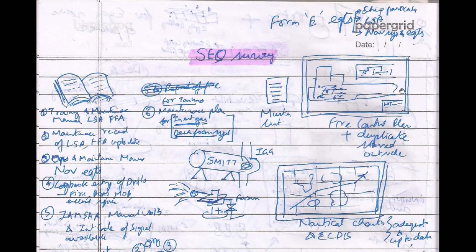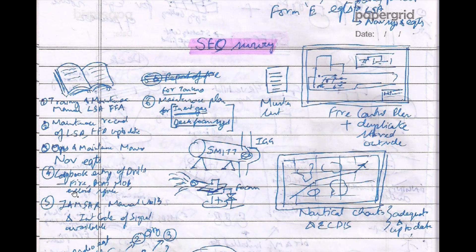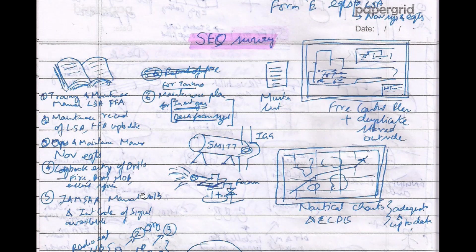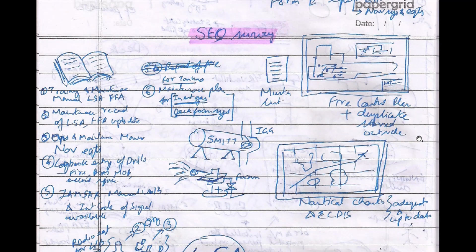If the surveyor asks how you would prepare for the SEQ survey, start with the general points, then move on to documentation. There is a checklist of six key points to remember: training and maintenance manual for LSA and FFA, maintenance records for LSA and FFA, operation and maintenance manual for navigation equipment, logbook entries for drill records — fire, boat, MOB, enclosed space — the IAMSAR manual, and the International Code of Signals. Specifically for tankers, a maintenance plan for the inert gas and deck foam system must also be present. You should also have a muster list and fire control plan, with a duplicate copy stored outside in a weathertight container, along with nautical charts and ECDIS that are adequate and up to date.